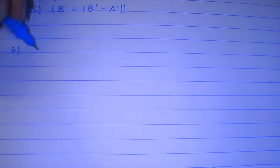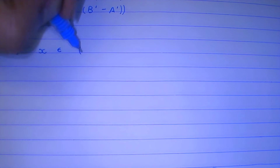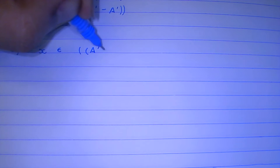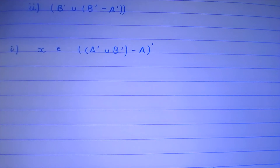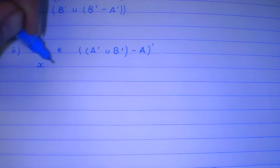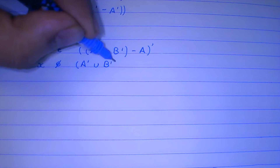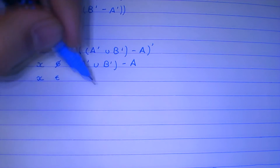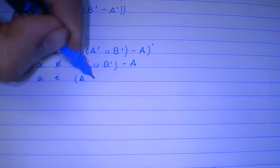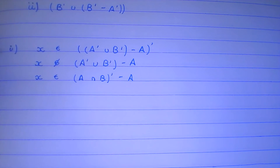Let us say that x, an arbitrary element, belongs to the expression (A' ∪ B') - A, whole complement. This would mean that x would not belong to (A' ∪ B') - A. So x would not belong to (A ∪ B)' - A, and that's De Morgan's law in application.